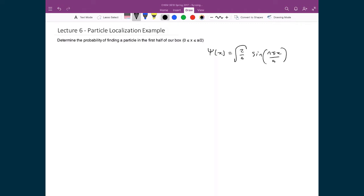Now that we have this, we can actually start asking questions like what is the probability of finding the particle in the first half of our box.